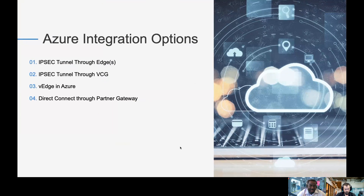We essentially have four integration options that we're going to cover today into Azure. The first is creating an IPsec tunnel through the VeloCloud edge device, the VCE. The second is creating an IPsec tunnel through the VeloCloud gateways, or VCGs. The third is creating a virtual edge within the VeloCloud SD-WAN architecture into Azure. And the fourth is using the direct connect option through the partner gateway environment.